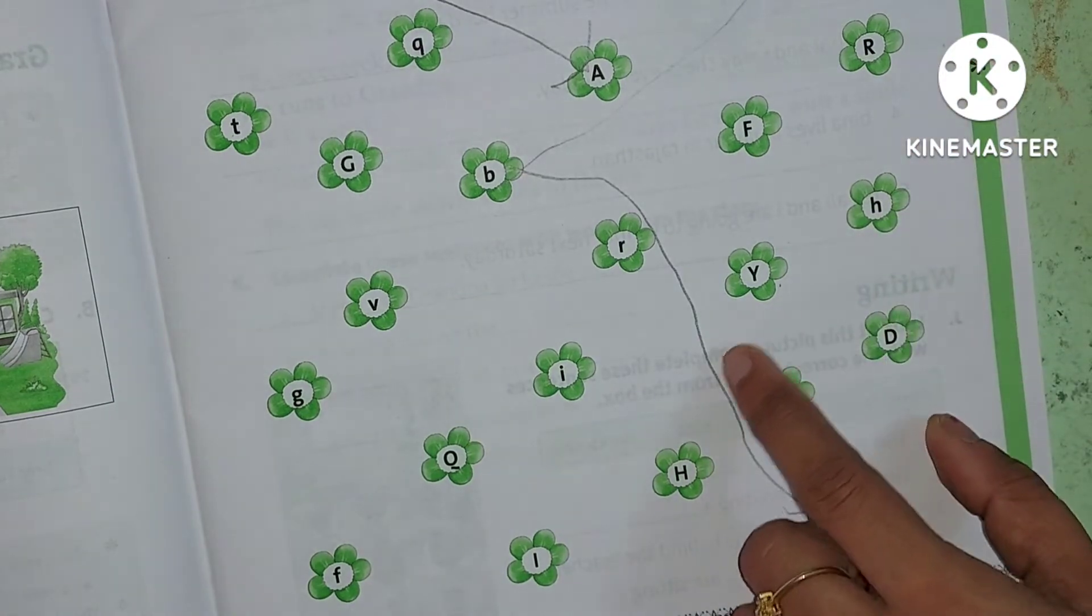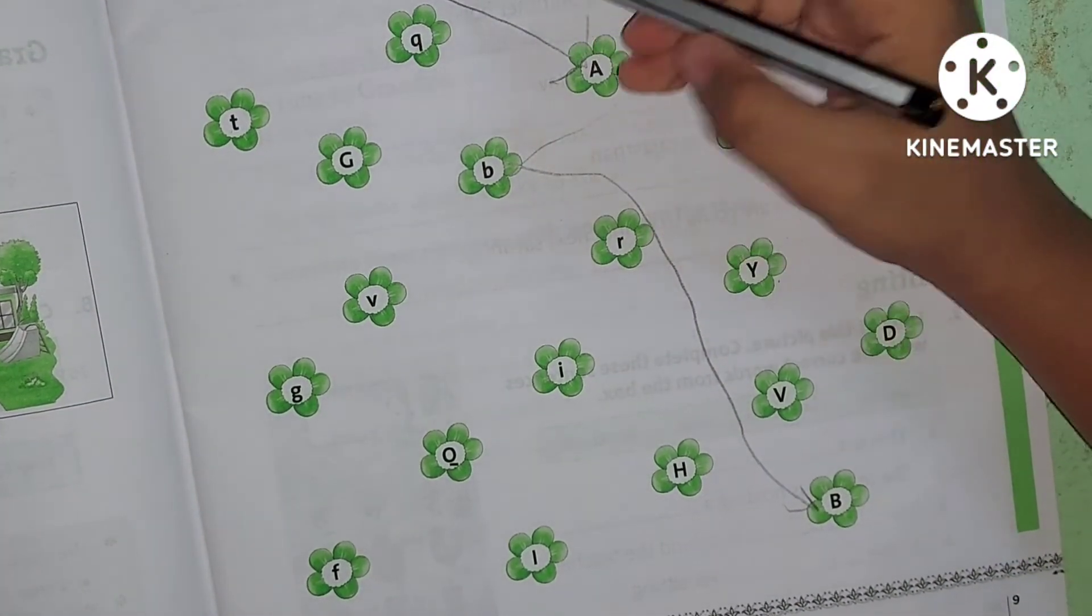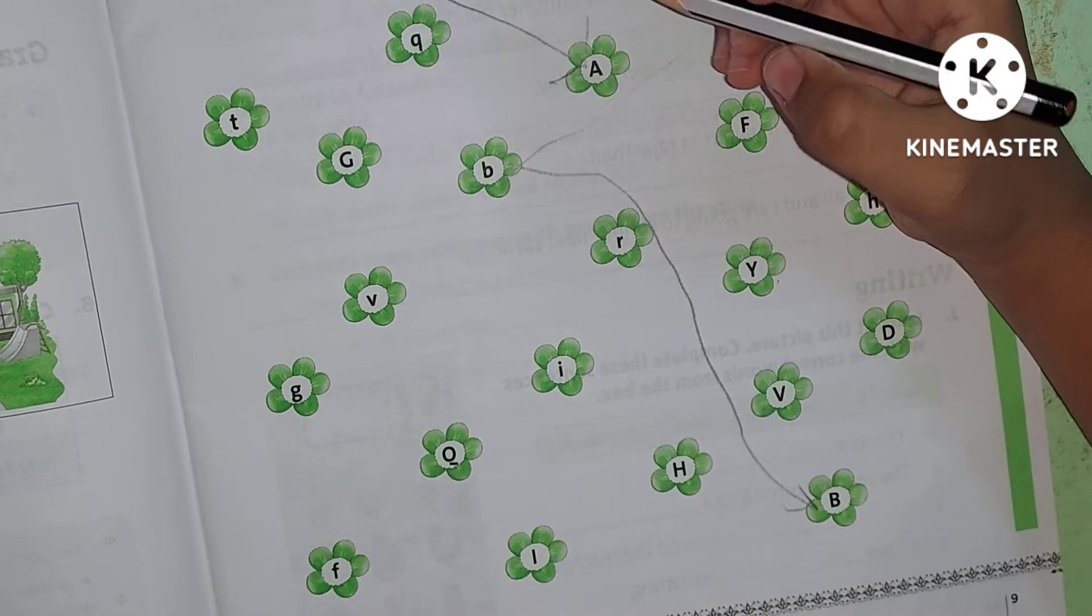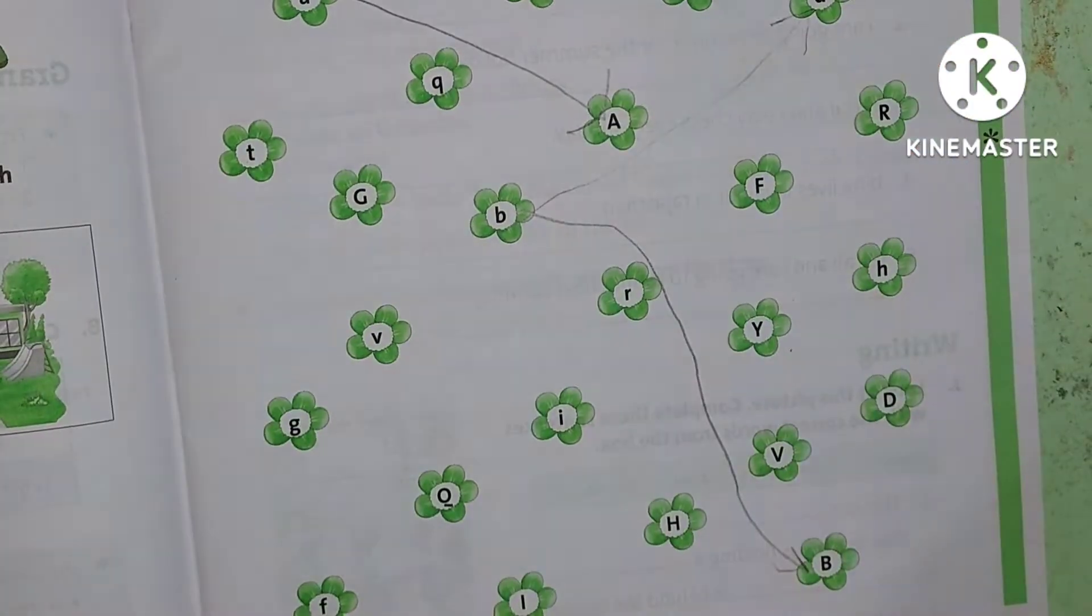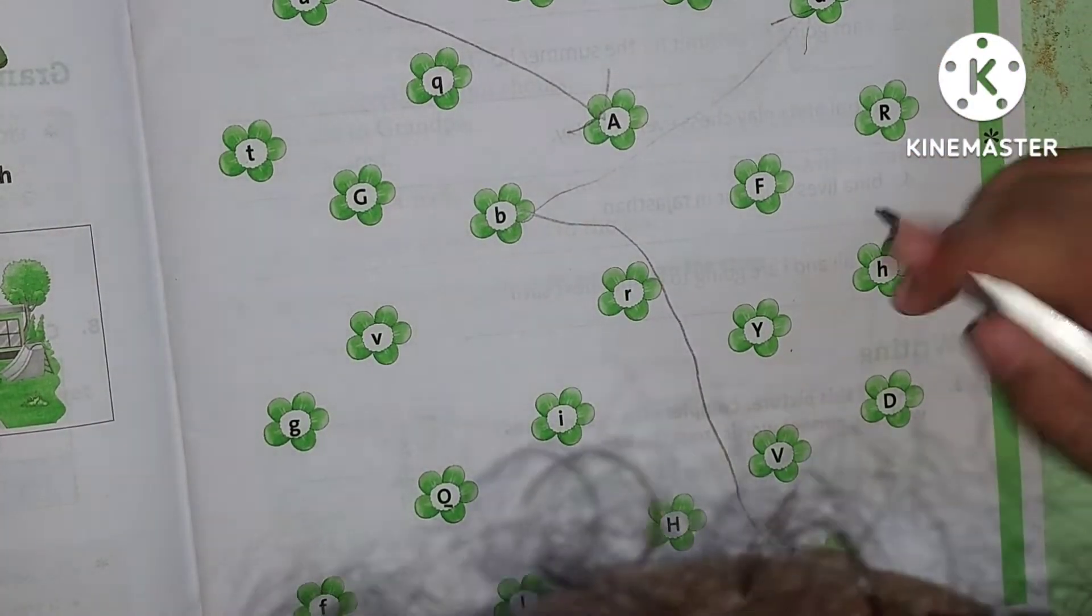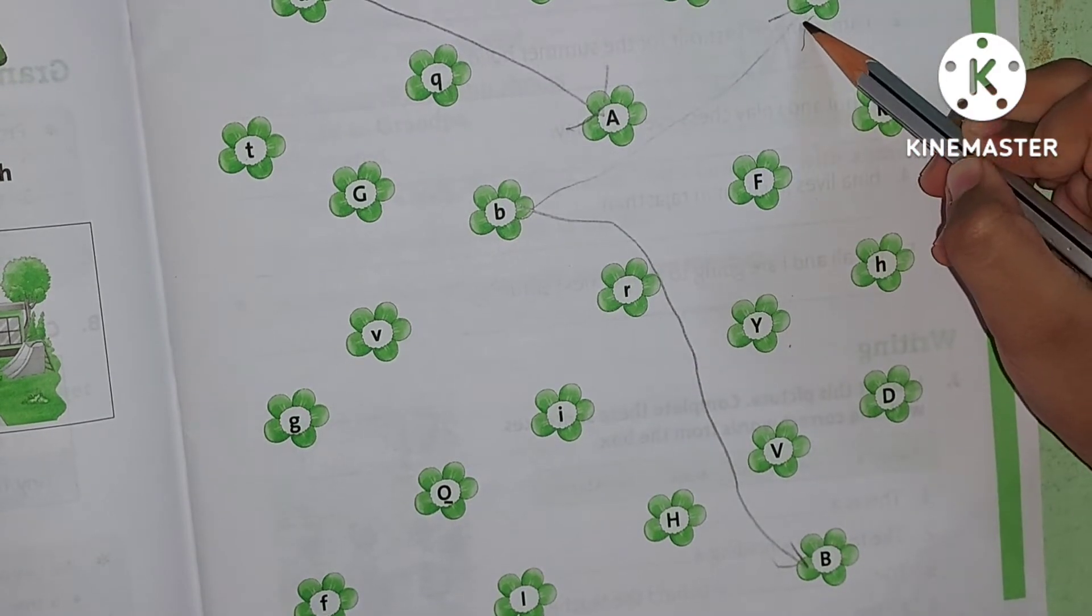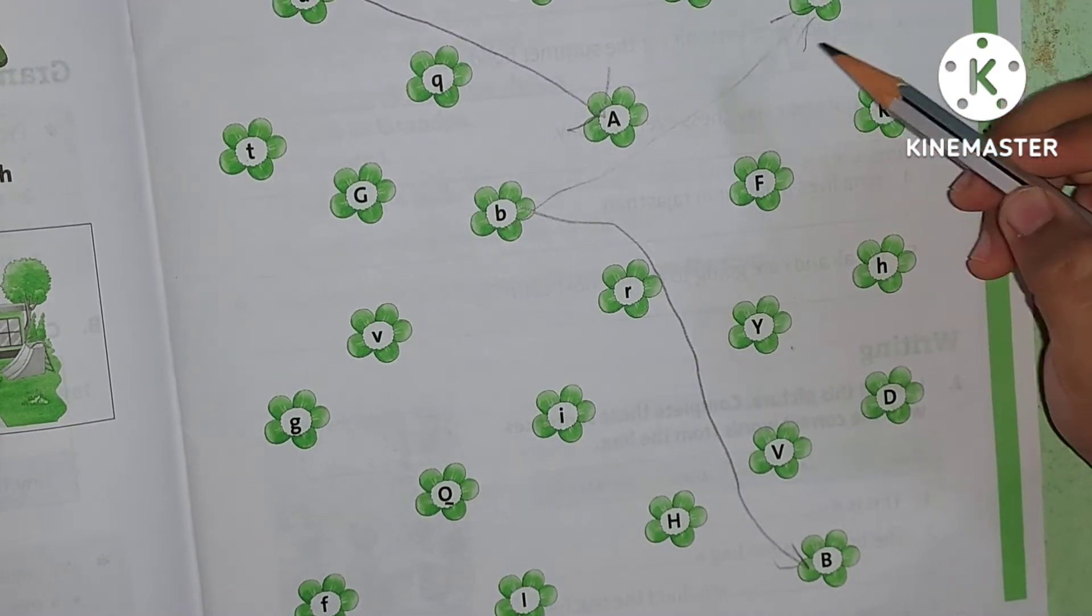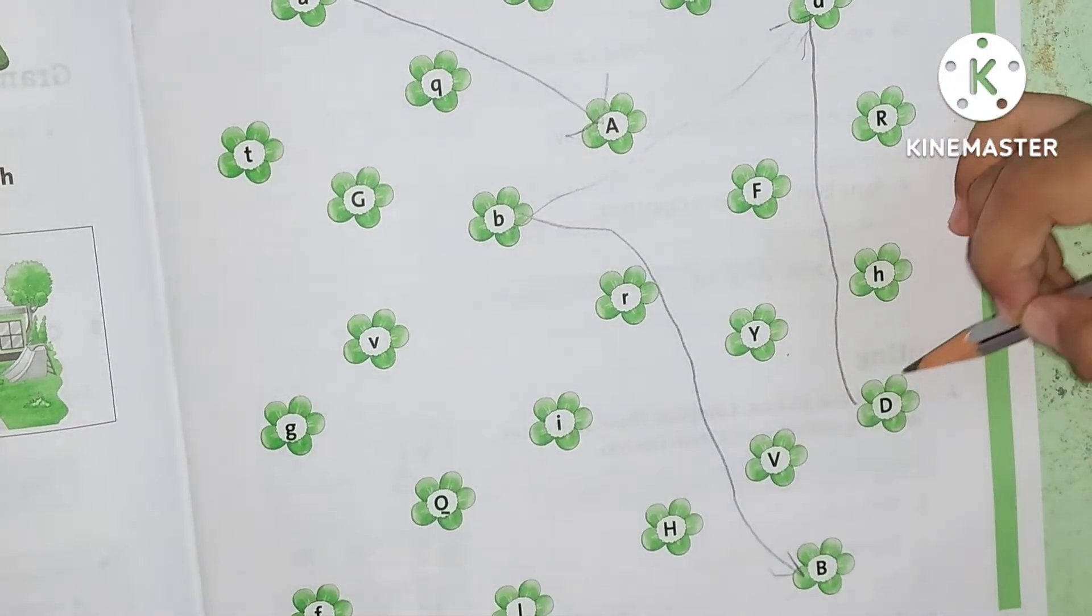A, B, C, D, look. D, small D, small D, small D. Now find the big D. Good.